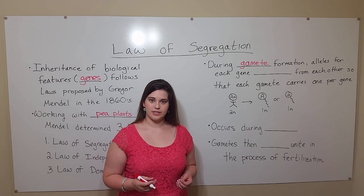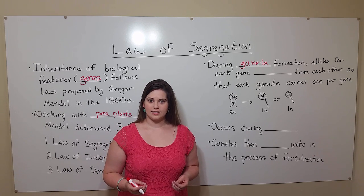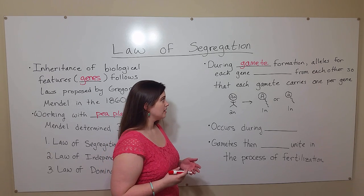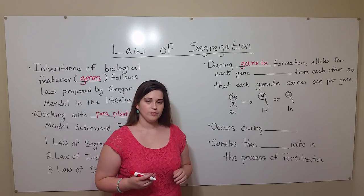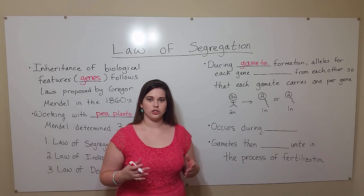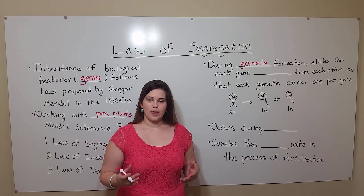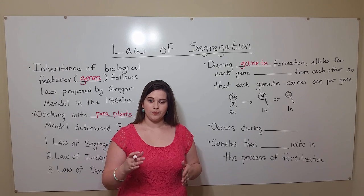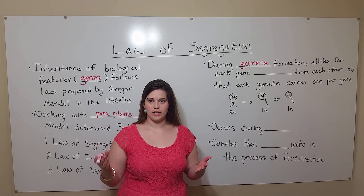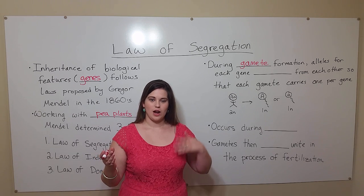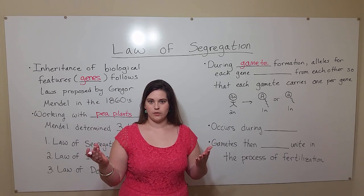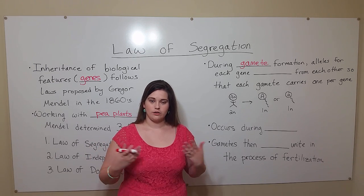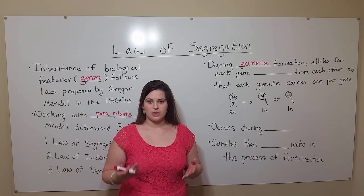In humans, these are sperm cells from the father and egg cells from the mother. When sperm cells and egg cells are made, you have alleles for each gene. Remember that alleles are just alternative forms of a gene. So in a plant, you may have a gene for flower color with one allele from the mother and one from the father — perhaps purple flowers from the mother and white flowers from the father. That's an example of two different alleles, two alternative forms for the same gene.